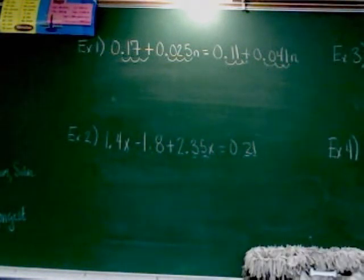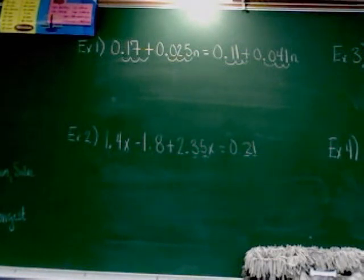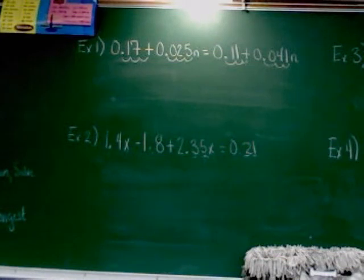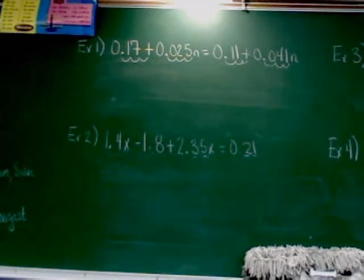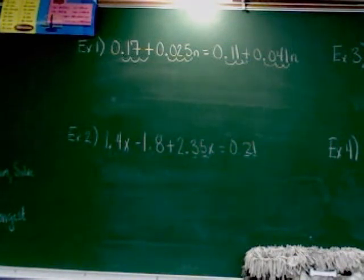Moving the decimal three times over is like multiplying by 1,000 — you're multiplying by a factor of 10. But rather than worry about the scientific reason, I just tell you to move the decimal.